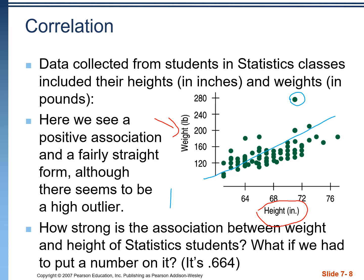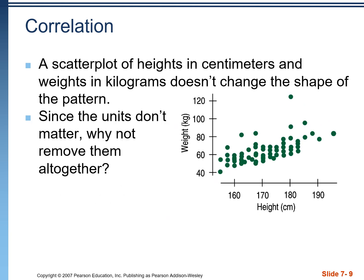The question asks how strong is the association between weight and height. It's a bit scattered but still fairly close to that line — we called it moderately strong. The actual number we can put on it is 0.664; this is called the correlation. That correlation value of 0.644 tells us how well the data fit the line of best fit. This graph is slightly different from the previous one — height is now in centimeters instead of inches, and weight is now in kilograms instead of pounds. When we change units, it's not going to change the correlation value — it's still going to be the same 0.644. Since units don't matter, we can remove them altogether.